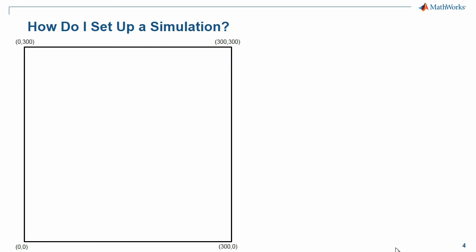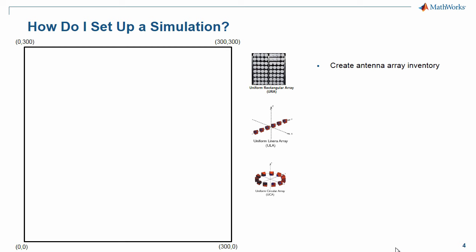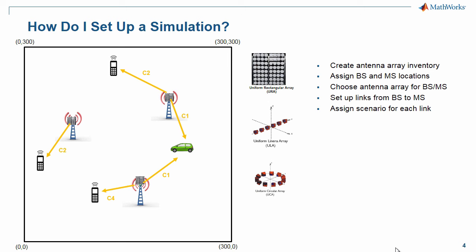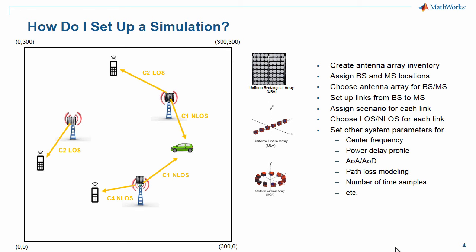So now you might ask yourself, how do I set up a simulation? This graphic shows the process. First, you create an antenna array inventory. Then, assign base station and mobile station locations. Choose an antenna array type for each base or mobile. Set up links between the base stations and mobiles. Assign a scenario for each link: urban, rural, etc. Choose line of sight or non-line of sight propagation for each link. And finally, set up the additional system parameters that you care about, as listed here.